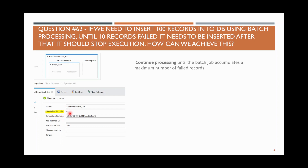But if you set maximum failed records to 10, then up to nine failures the batch will continue. When the 10th record fails, it will stop there and complete that particular flow.